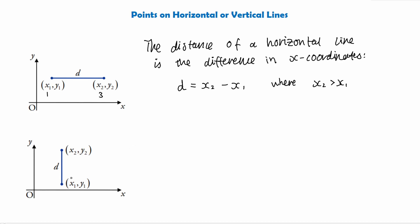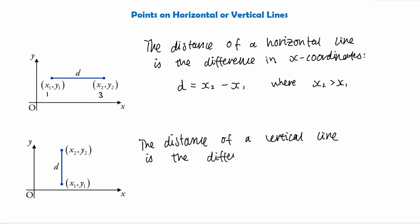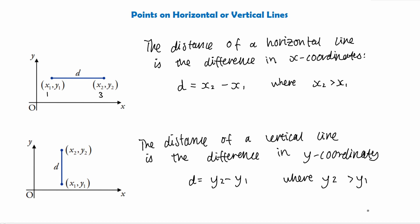The same applies for vertical lines. For a vertical line, the y-coordinate is changing while the x-coordinate stays the same. So the distance is the difference between the two y-coordinates. The distance of a vertical line is y2 subtract y1, again where y2 is greater than y1.